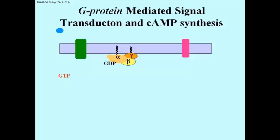When the signal molecule, here shown in blue, binds to the cell surface receptor, which is shown in green, the receptor changes shape and can bind to the G-protein. This binding causes an allosteric change in the G-protein, leading to GTP displacing the GDP.